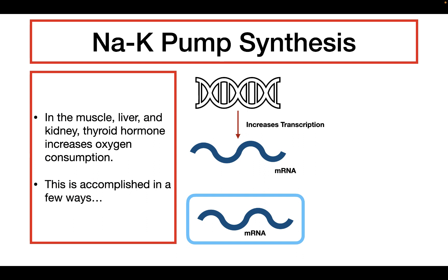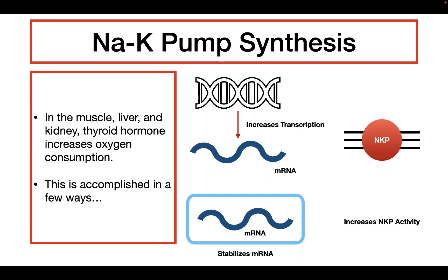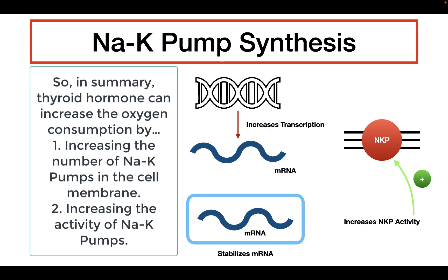In addition, thyroid hormone can also increase the activity of the sodium-potassium pumps in the cell membrane. By increasing the sodium-potassium pump's activity, the pump brings in more potassium and pumps out more sodium, using up more ATP and therefore increasing the oxygen consumption of that cell. In summary, thyroid hormone both increases the number of sodium-potassium pumps in the cell membrane and increases their activity. Both of these effects increase the amount of ATP the cell uses, and the oxygen consumption of those cells also increases.